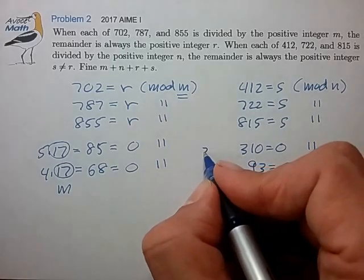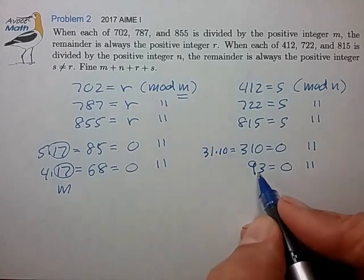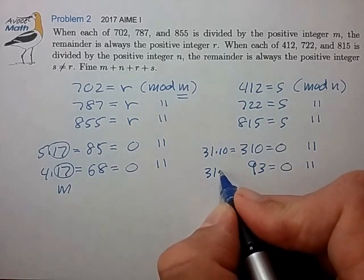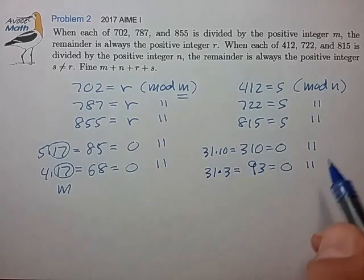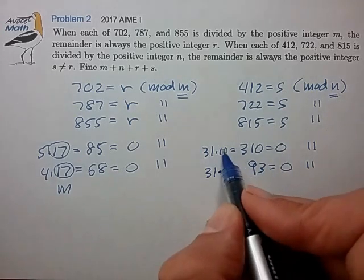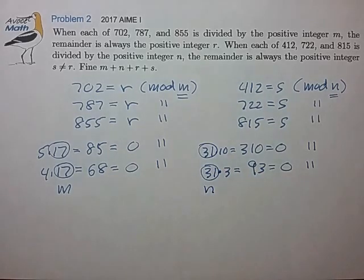Factoring the top, we have 31 times 10 is equal to 310. 93 is 31 times 3. Here again, for these two linear congruences to be true, the modulus has to equal this common factor, 31. So we know n is equal to 31 in the right case.